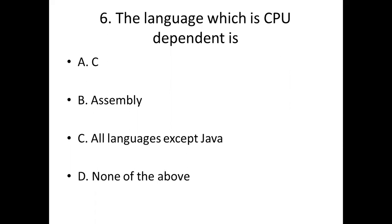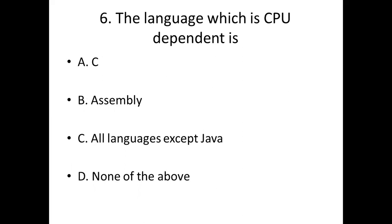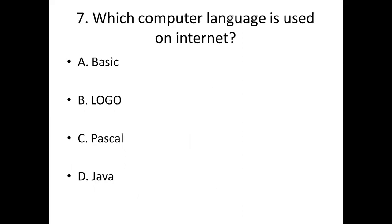Sixth bit: The language which is CPU dependent is. Option A: C. Option B: Assembly. Option C: All languages except Java. Option D: None of the above. Answer: Option C, all languages except Java.